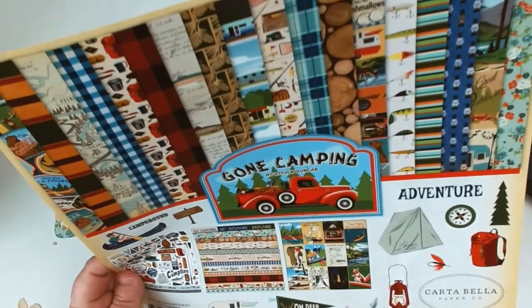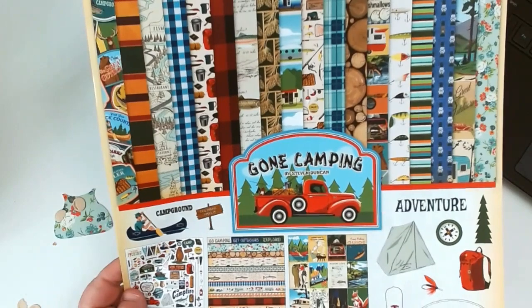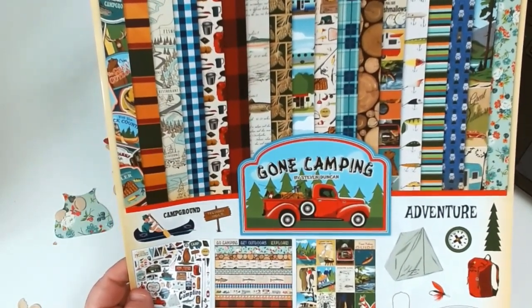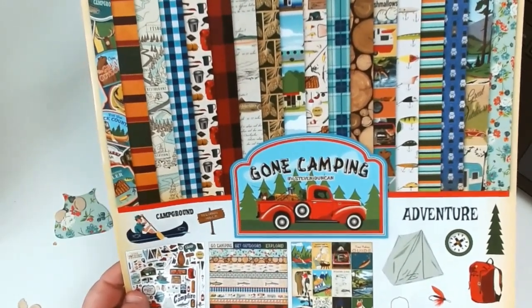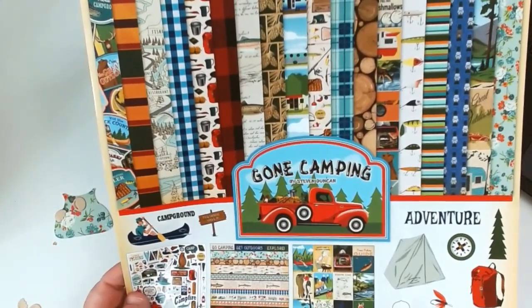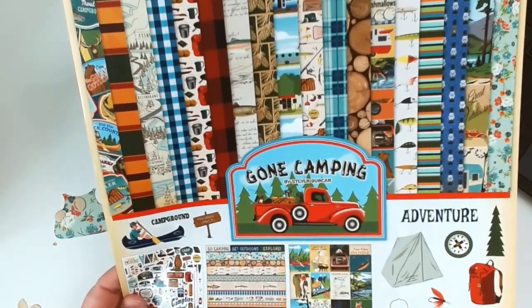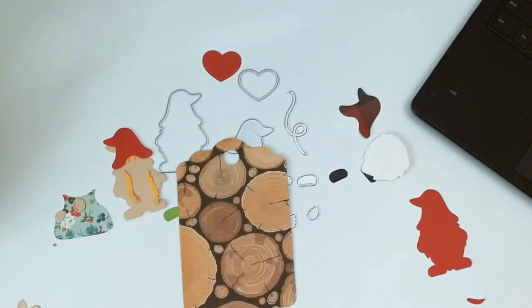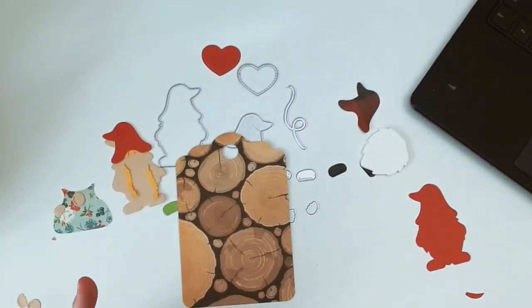The paper collection that I'm using is called Gone Camping. It's a Cartebella paper and this was designed by Steven Duncan. He sent me this and I just love it. My plans are to make my sisters some camping albums. But for now, I think I'm just going to create the cards or tags. Hopefully I'll have these done in a few weeks because my parents are going to be leaving in February to visit them. Let's go ahead and get started with the speed through tutorial.